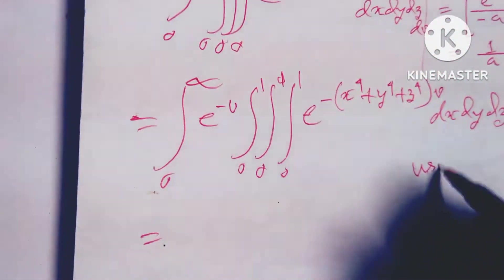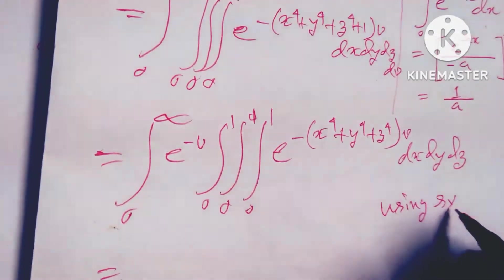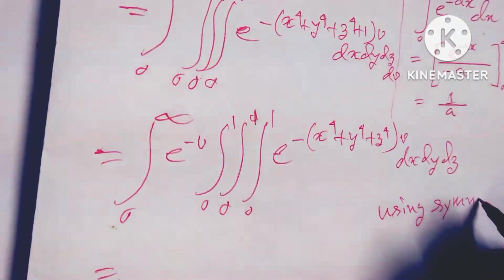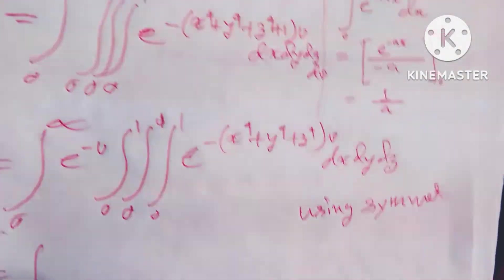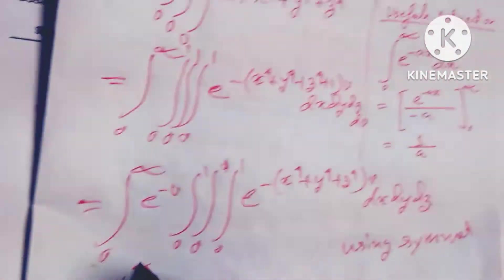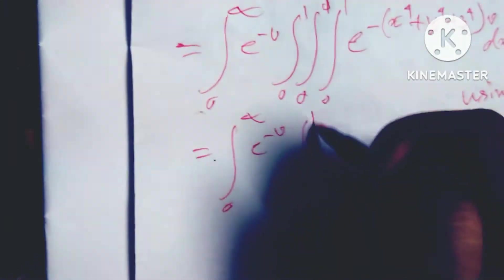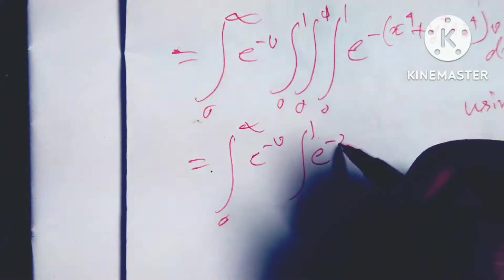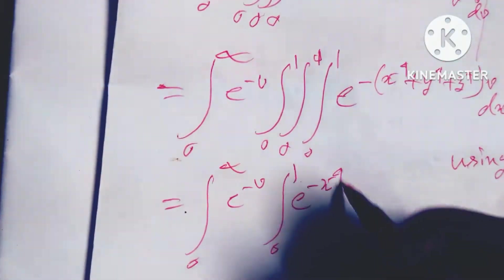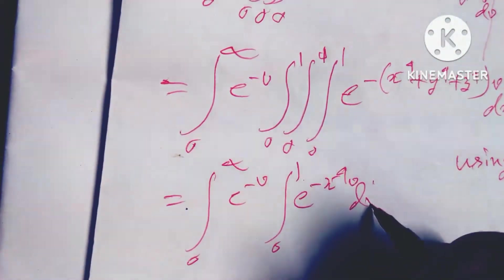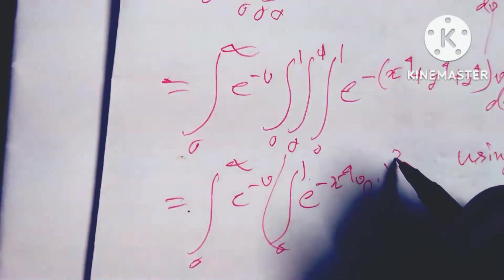Now using symmetry — I use the symmetry formula — I can write: integral from 0 to infinity of e to the power minus v, times the integral from 0 to 1 of e to the power minus x to the power 4 times v dx, raised to the power cube, then dv.